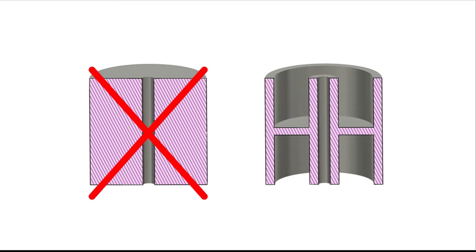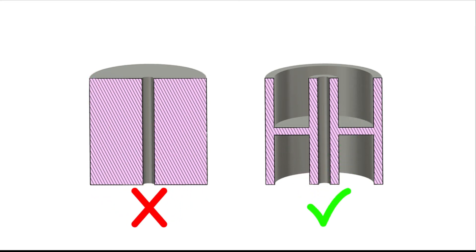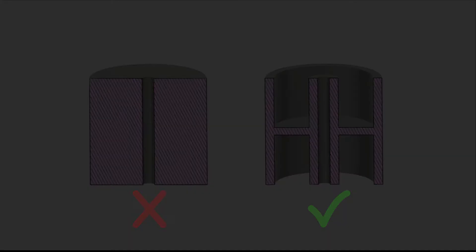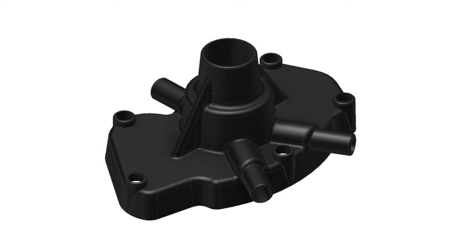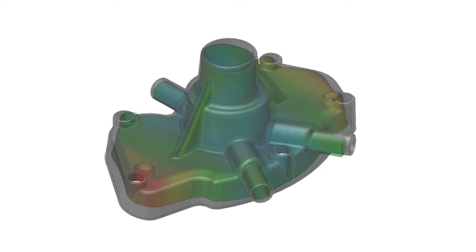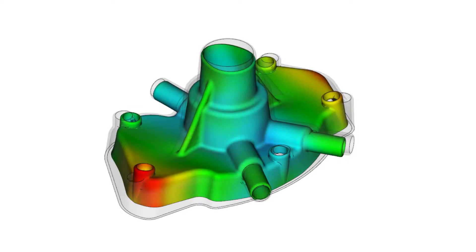Ideally, injection molded parts are relatively thin-walled with a uniform nominal wall thickness. Following this simple guideline will help reduce the risk of cosmetic or structural defects and also part distortion, otherwise known as warpage.